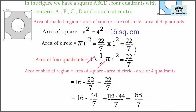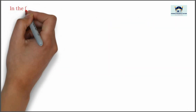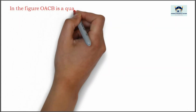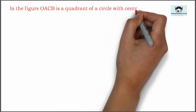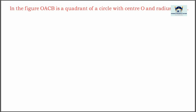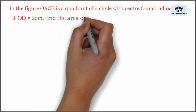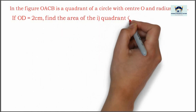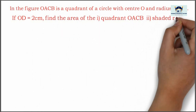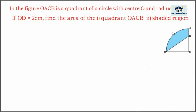Now we'll take another problem. In the figure, OACB is a quadrant of a circle with center O and radius 3.5 centimeter. If OD is equal to 2 centimeter, find the area of the quadrant and the shaded region.